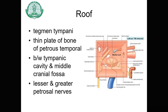The roof of the middle ear is formed by a bone known as the tegmen tympani. This bony plate separates the middle ear cavity from the middle cranial fossa and is pierced by the lesser and greater petrosal nerves through their respective canals on the tegmen tympani. If the tegmen tympani is not ossified, infection from the tympanic cavity below may extend to the cerebral meninges.